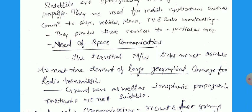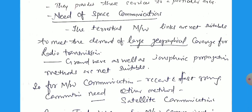Now, the need for space communications — why do we need it? Terrestrial microwave links are not suitable to meet the demand of large geographical corridors for radio transmissions. If you want to transmit over a large area, it is not possible using terrestrial antenna towers. Ground wave as well as ionospheric propagation methods are also not suitable for this type of broad communications. So for microwave communications, the fast-growing communications need other methods, and that is Satellite Communications.